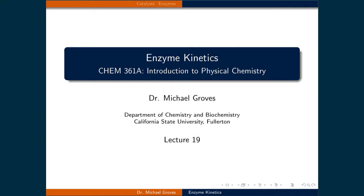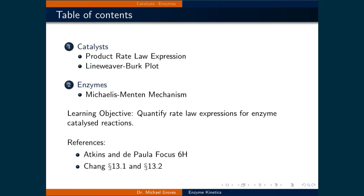Welcome to lecture 19. In this lecture, we will quantify rate law expressions for enzyme catalyzed reactions. This lecture will be divided into two parts. In the first part, we will define what is a catalyst and examine a simple catalyzed reaction mechanism to determine the rate law expression for the formation of the product. In the second part, we will apply this rate law expression to enzyme kinetics in order to define the Michaelis-Menten rate law expression and analyze actual data using the Lineweaver-Burk plot to determine the relevant constants for the process.